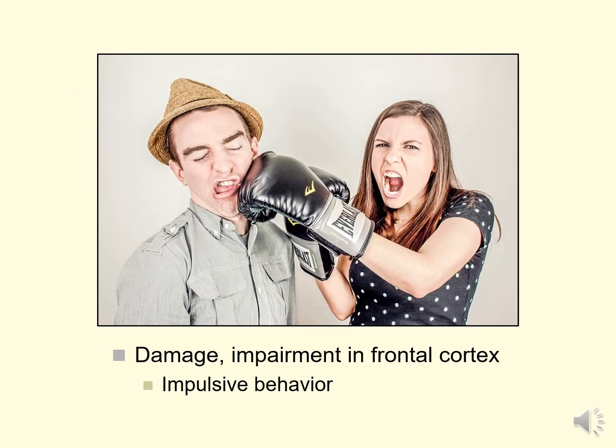We don't need massive damage to the frontal cortex — impairment there can result in impulsive behavior and overt impulsive acts like aggression. Alcohol messes up the functioning of the frontal lobe, causing people who are drunk to do and say things they probably otherwise wouldn't. One explanation for how attention deficit disorder occurs is that there's dysfunction or decreased activity in the frontal lobes, and that's why students or young people with attention deficit disorder are not able to attend to the right things.